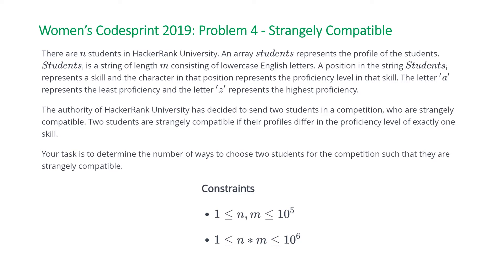Your task is to determine the number of ways to choose two students for the competition such that they are strangely compatible. The constraints are that n and m will be between 1 and 10^5, and the product of these two values will be between 1 and 10^6.